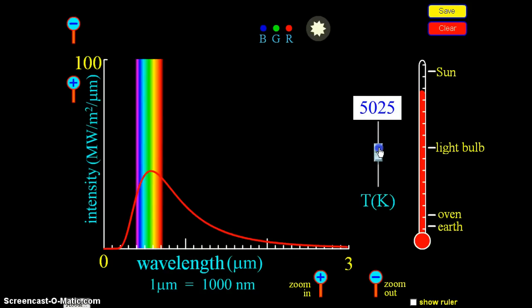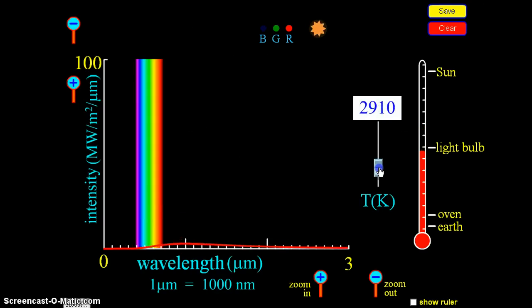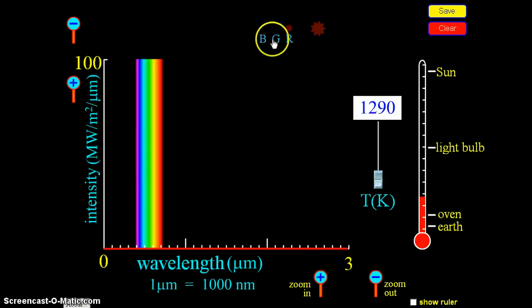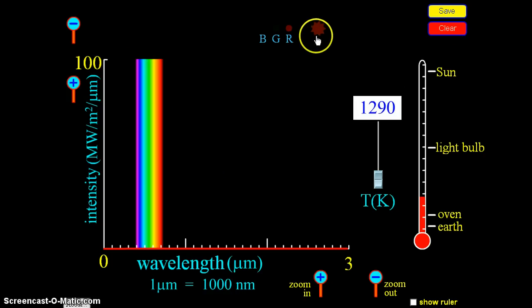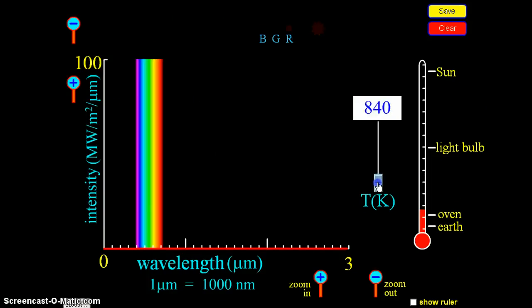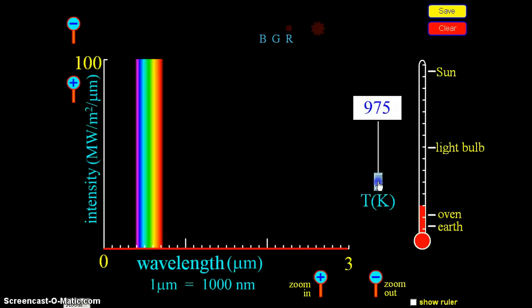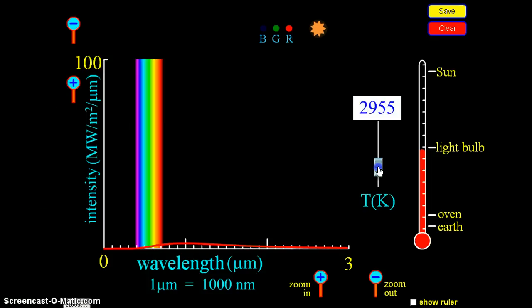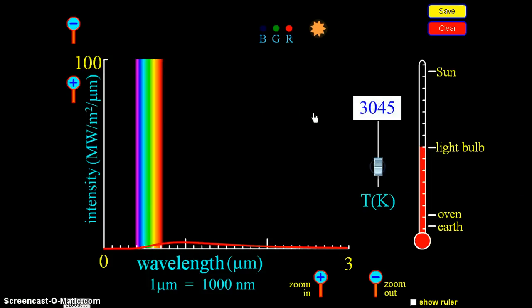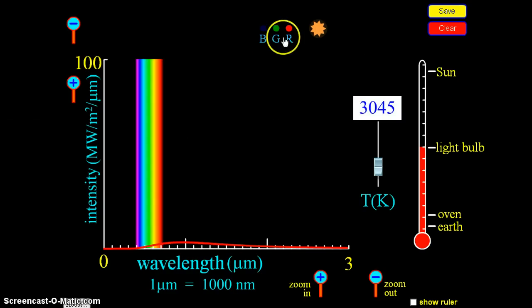If we decrease the temperature, we see two things happen within this simulation. The first thing we can see is that if we look at the BGR and this star-like shape in the center of the simulation, they go very dim and go into the red color. At very low temperatures, they almost go no color at all and black. As I start to increase the temperature past the oven mark of the thermometer to the lightbulb mark, we start to get the green, blue, and red colors.